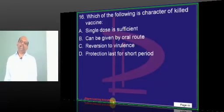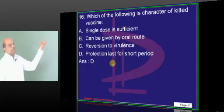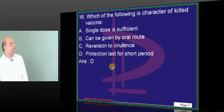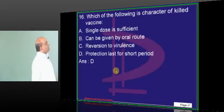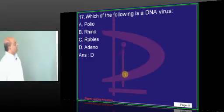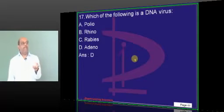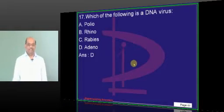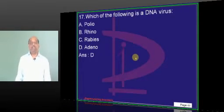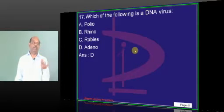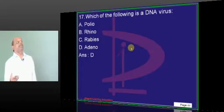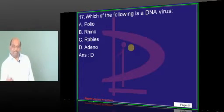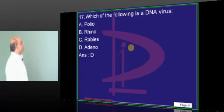Killed vaccine protection lasts for a short period, unlike live vaccine. You need to remember which viruses are RNA or DNA. Some classmates will be authorities in this subject — some exchange should occur in the reading room.